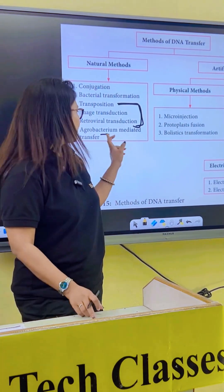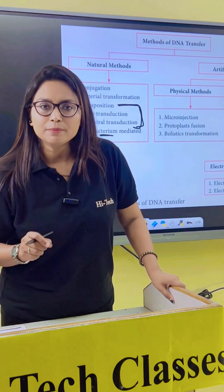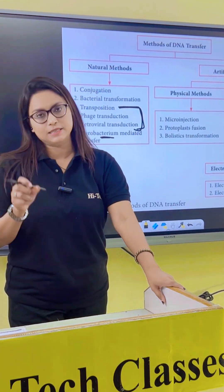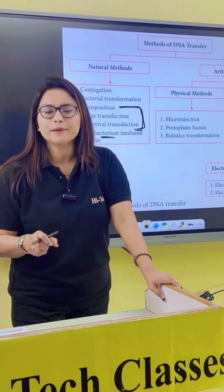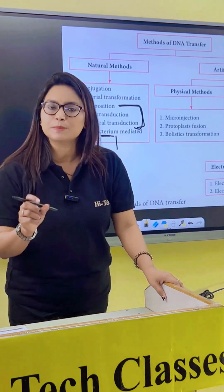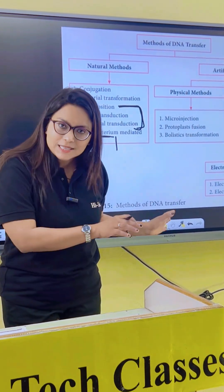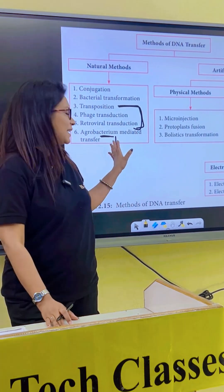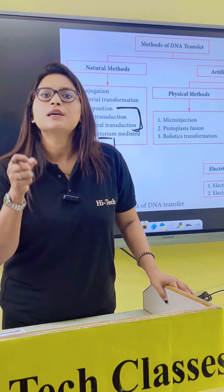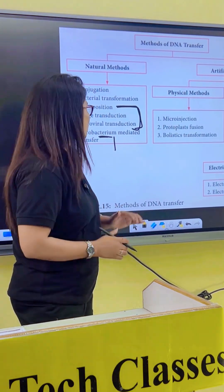The last one is agrobacterium mediated gene transfer. This is popularly known for plants. Agrobacterium is a bacteria found in soil — a rod-shaped bacteria — and it has a special type of plasmid called Ti plasmid, which stands for tumor inducing plasmid. In this type of gene transfer, the bacteria transfers its DNA to the plants and that causes the tumor. That's why it is called tumor inducing plasmid.